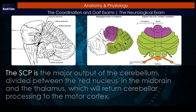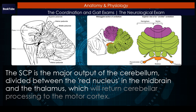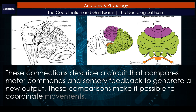The SCP is the major output of the cerebellum, divided between the red nucleus in the midbrain and the thalamus, which will return cerebellar processing to the motor cortex. These connections describe a circuit that compares motor commands and sensory feedback to generate a new output. These comparisons make it possible to coordinate movements.